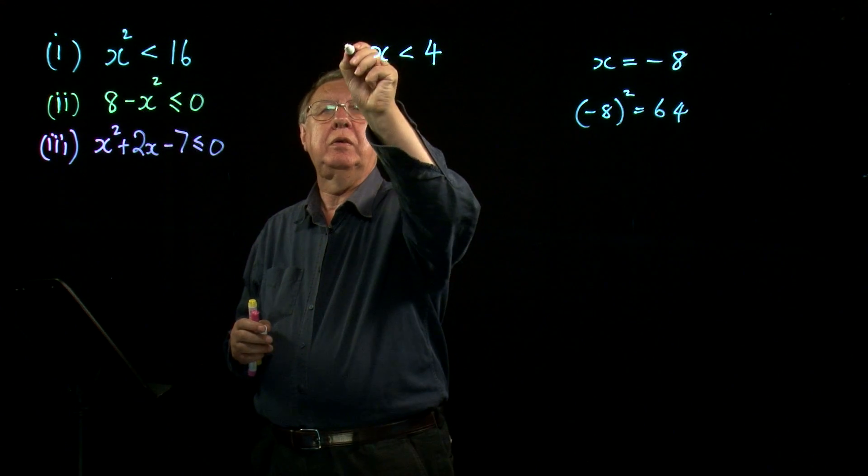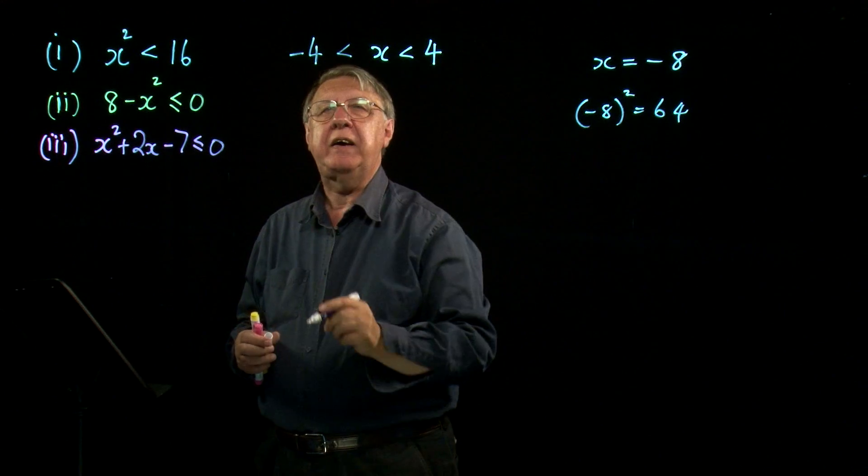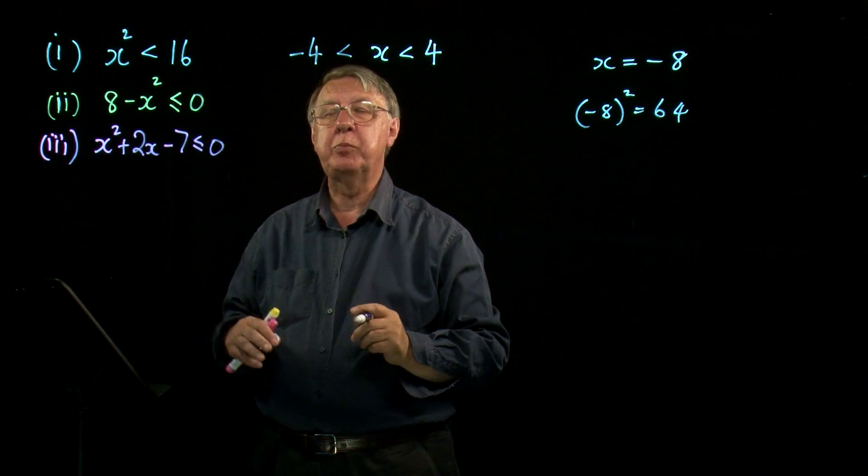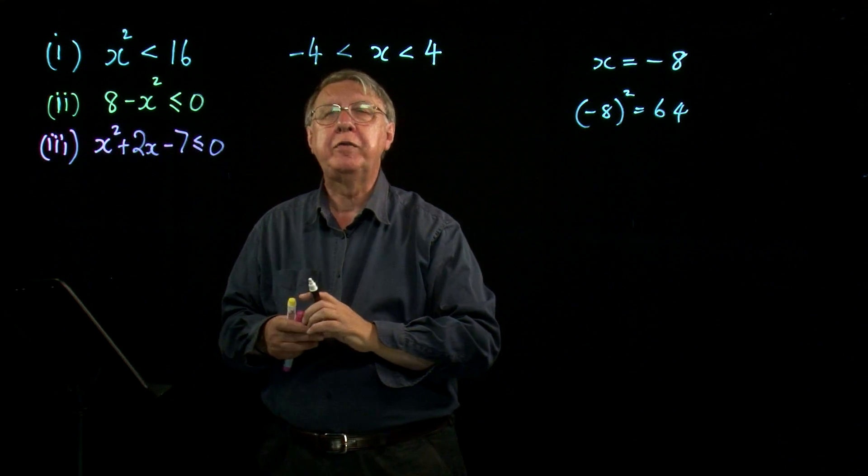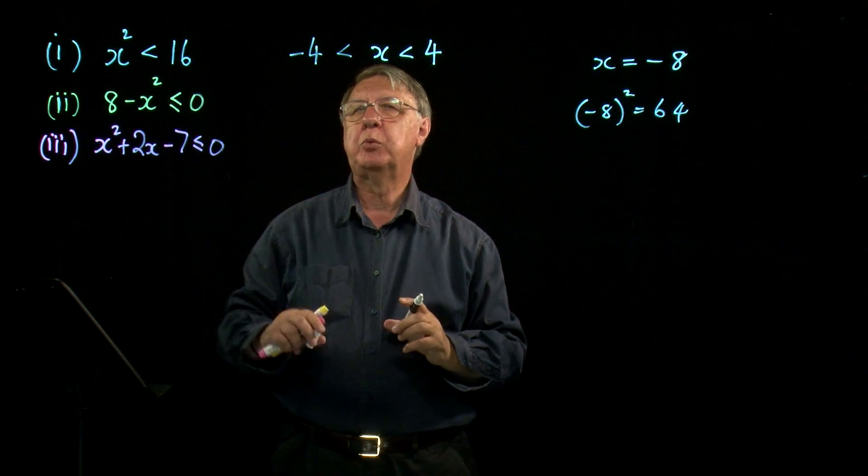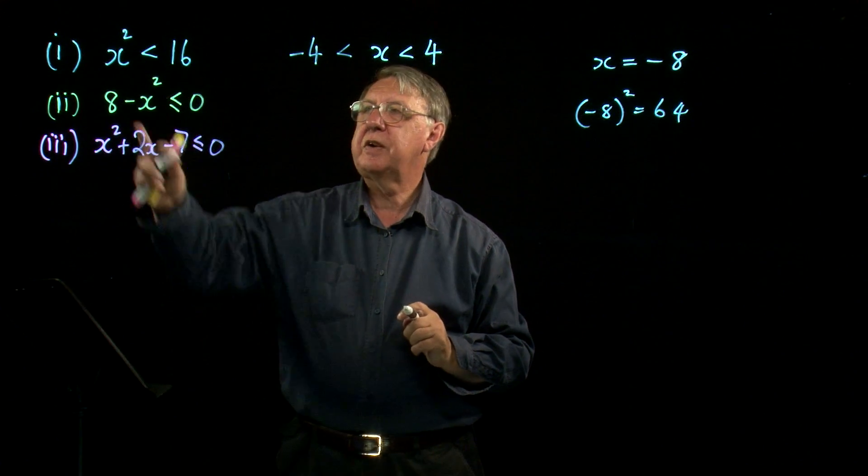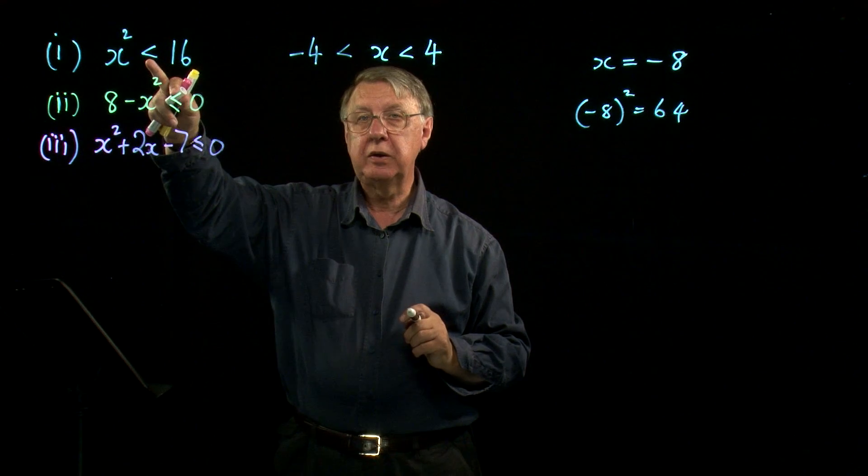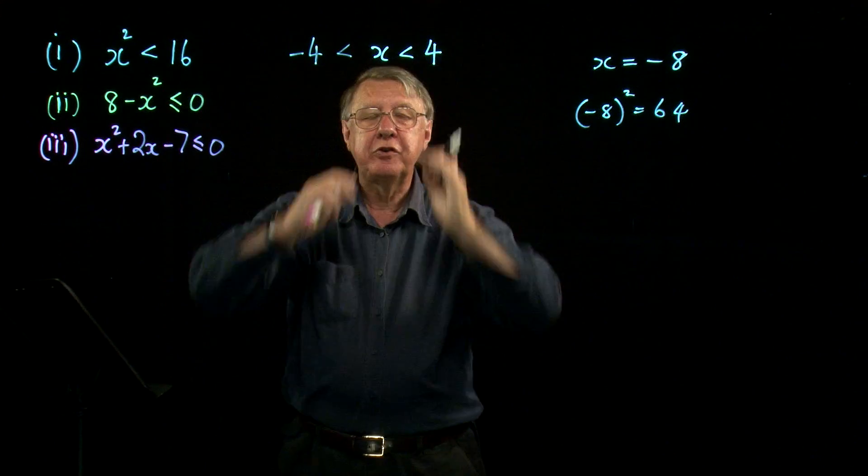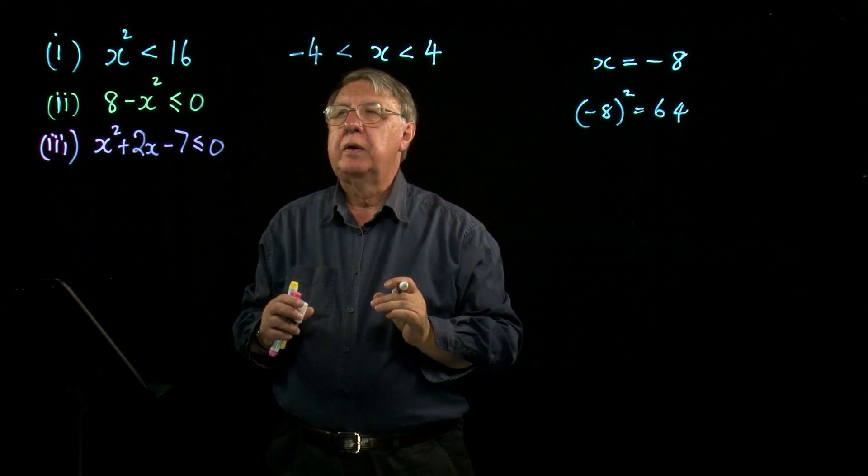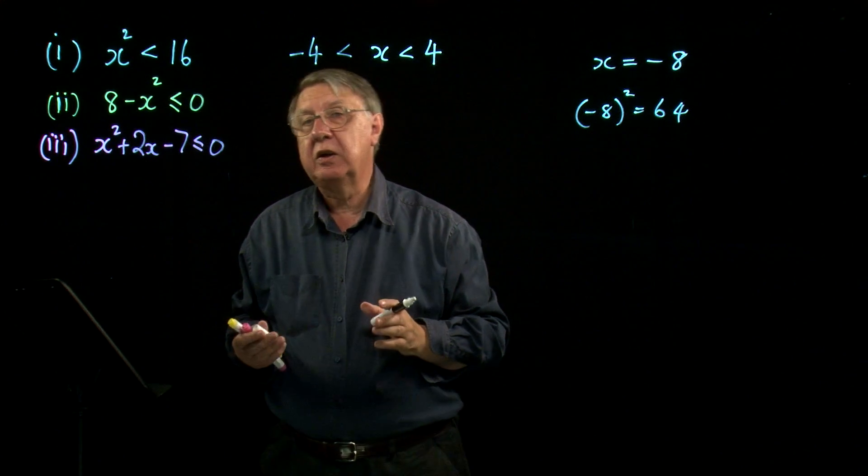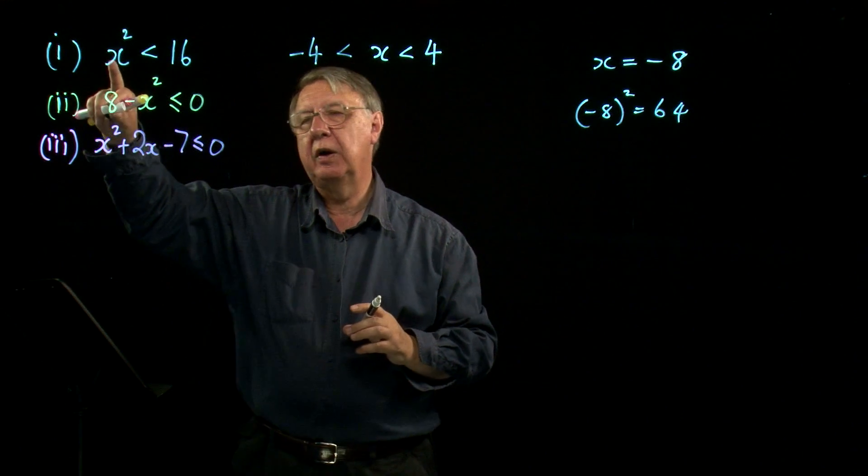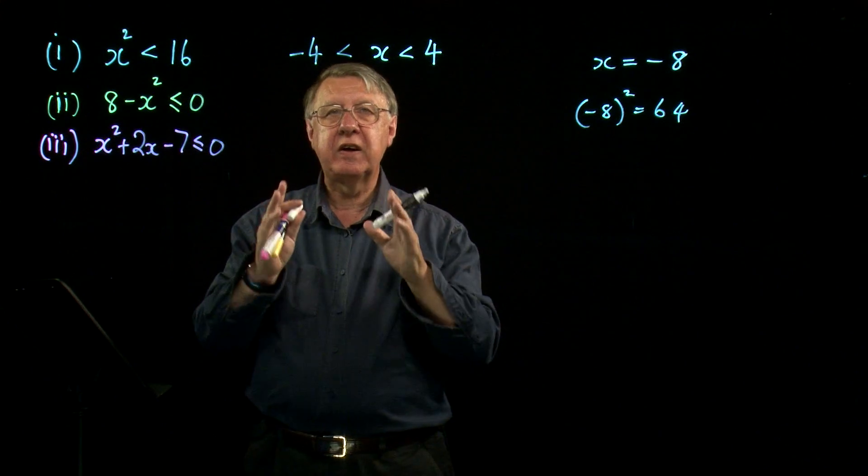And the whole point is that once x reaches negative 4, anything less, or sorry, more negative, but anything less than that, if you square it, you get an answer more than 16. So this inequality, which looks like a single inequality, leads to a sandwiched inequality. Now it's probably best to just try and learn that if there is a square term on this side, with a single inequality sign, it does lead to this sandwich.